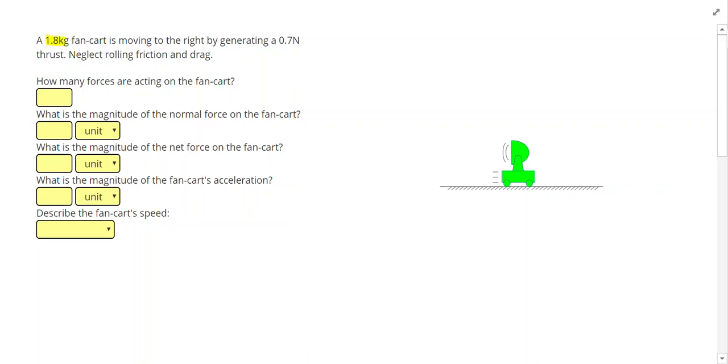A 1.8 kg fan cart is moving to the right by generating a 0.7 N thrust. Neglect rolling resistance and drag. Alright, in this problem we have a fan cart and we're going to start off by listing all the things we see in Newton's second law.